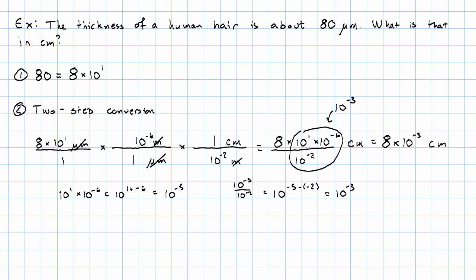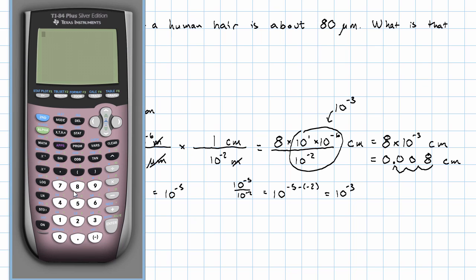That's a perfectly good answer. If I really, really, really want it in decimal notation, I can do that too. I start with 8 and move the decimal 1, 2, 3 places to the left. I have 0.008 centimeters. Notice how the scientific notation made those decimal places really easy to keep track of. I could also have done that on my calculator. I could have said 80 times 10 to the negative 6 divided by 10 to the negative 2. And I would have gotten that same 0.008.